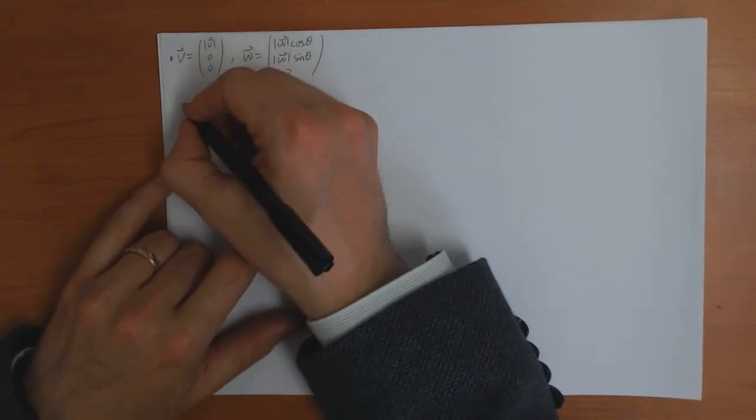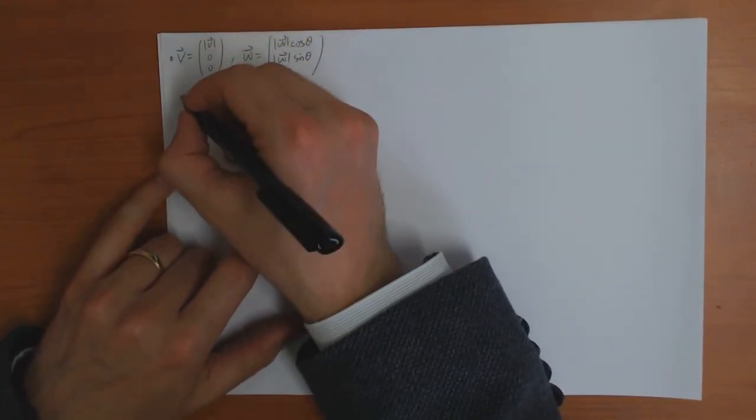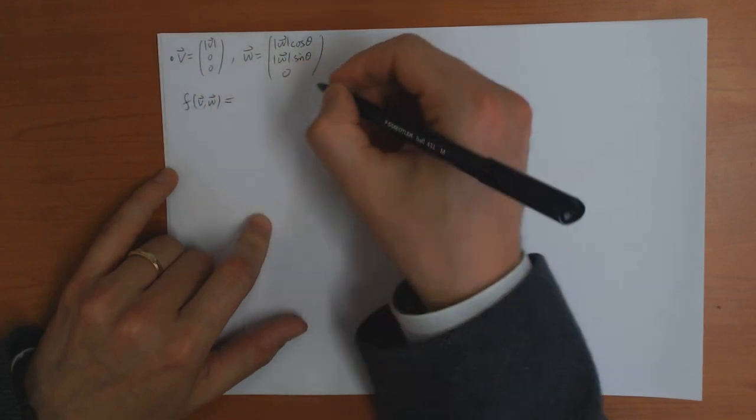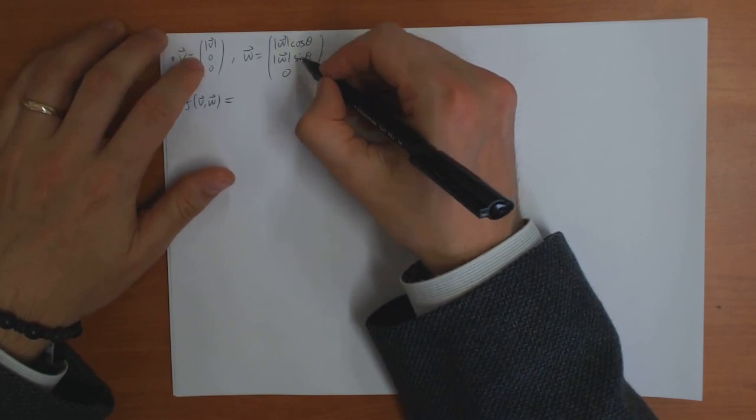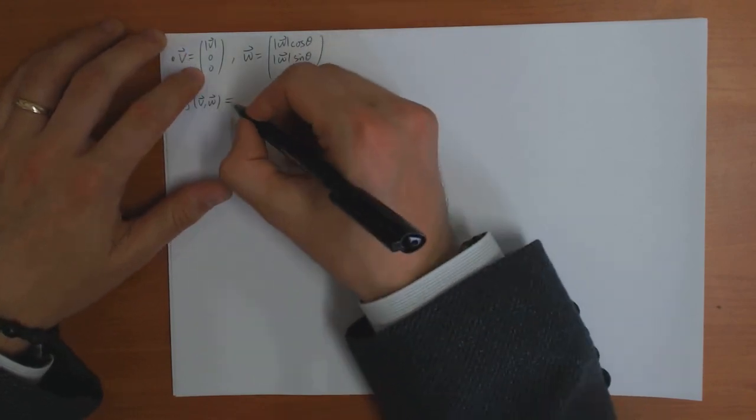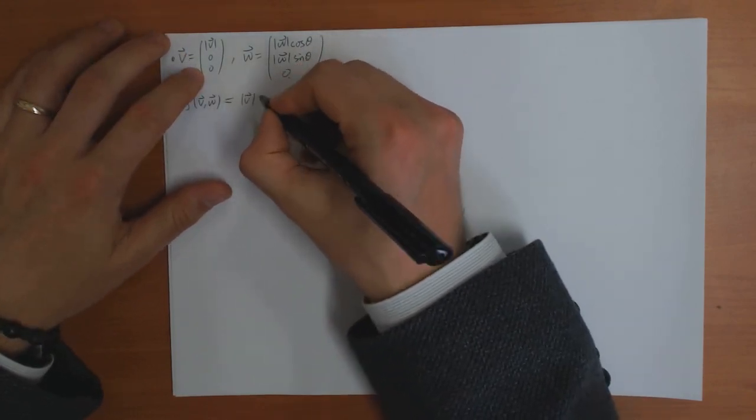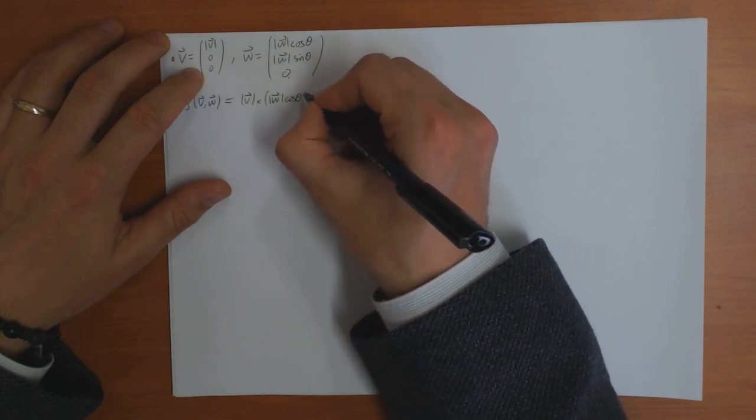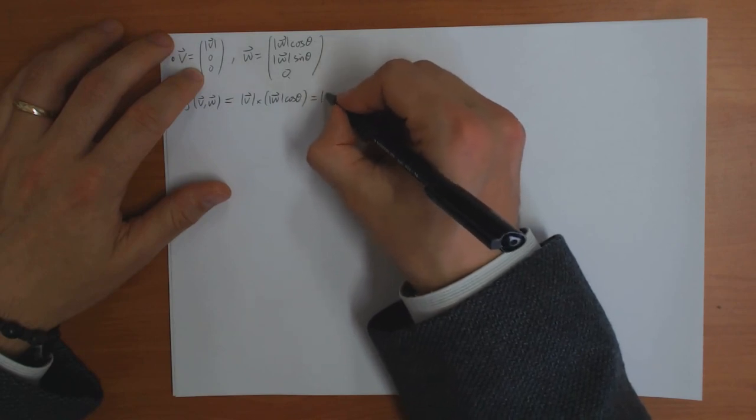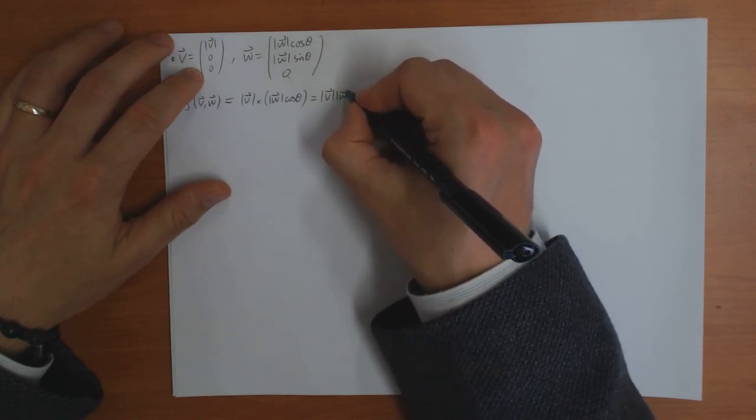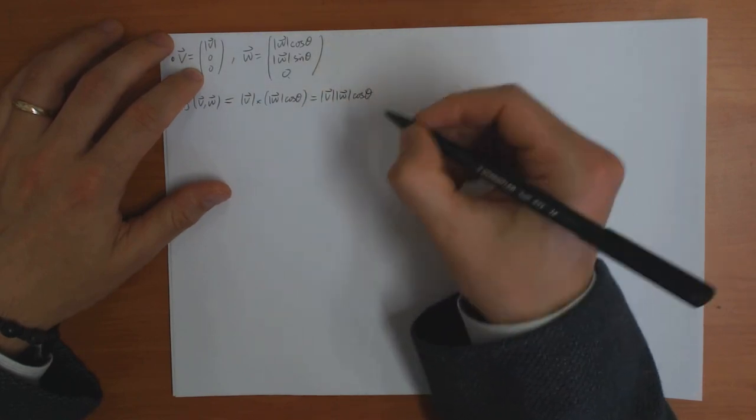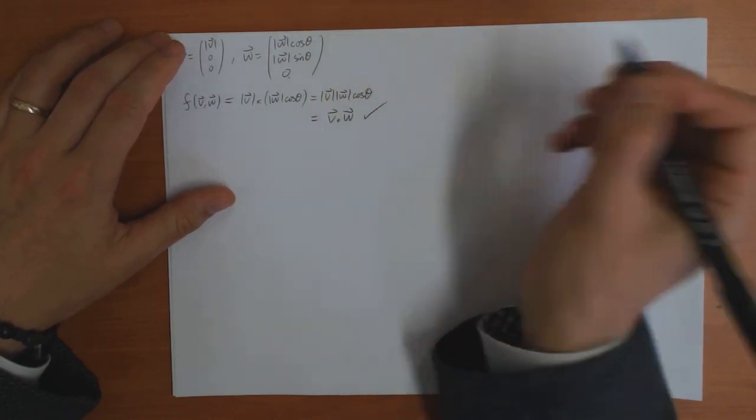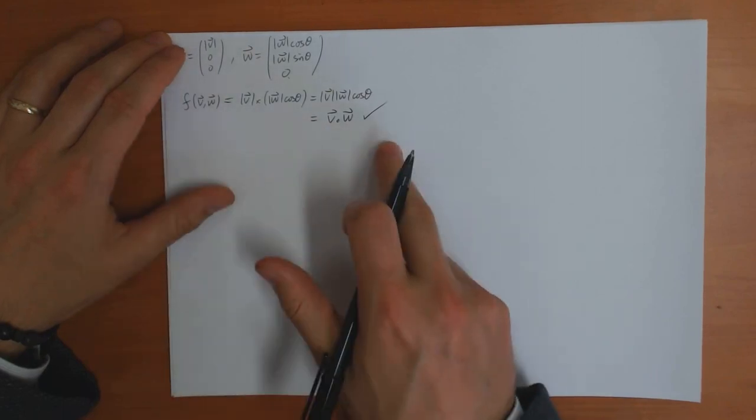So let's just check. So this function f of v and w, that's defined as this times that plus this times that plus this times that. So this is just v times w cos theta, which is length of v length of w cos theta, which is indeed equal to the scalar product. So that just takes the first one.